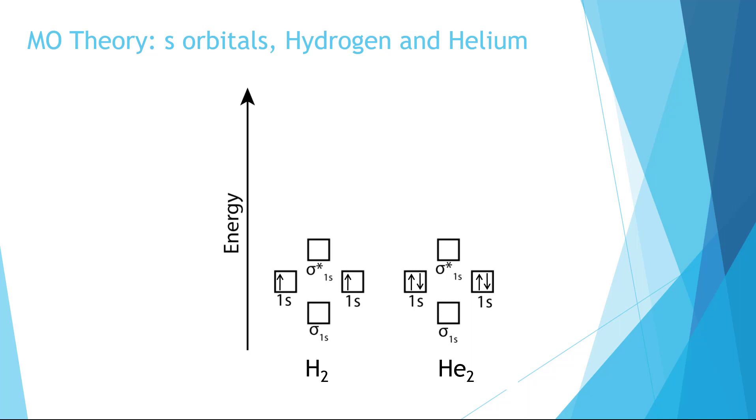We can draw boxes or lines for the molecular orbitals. You'll see them drawn both ways. Be sure to notice that one of the boxes is higher and one of the boxes is lower than the starting energy levels. These represent the bonding and anti-bonding orbitals respectively. The lower energy level is the bonding orbital, the higher energy level is the anti-bonding orbital. We will always fill electrons into the orbitals from low to high, just like we did for the atomic orbitals.